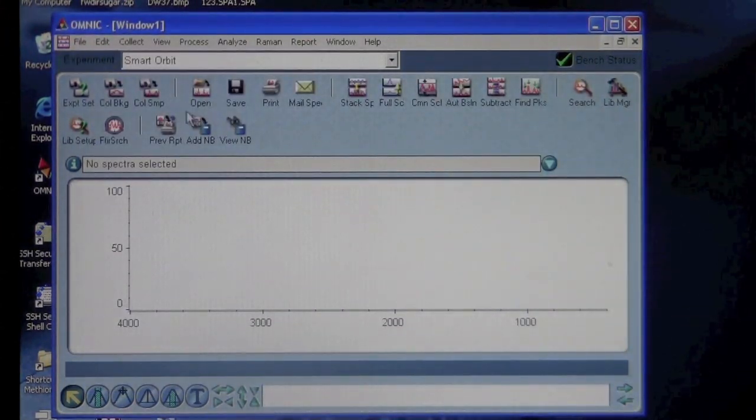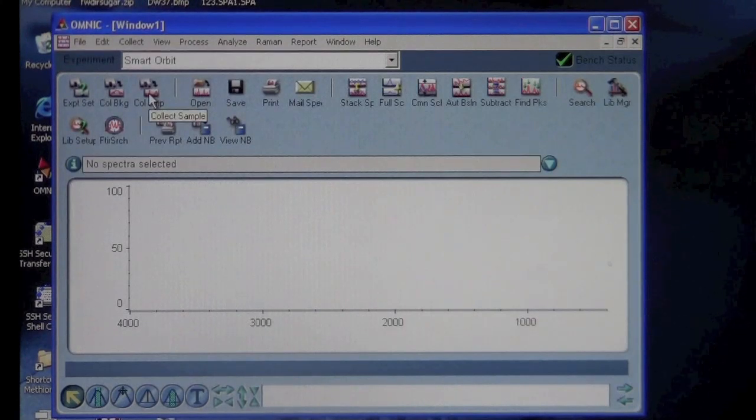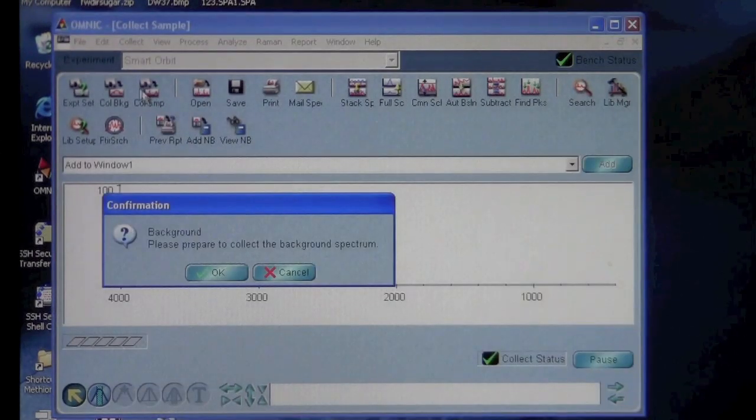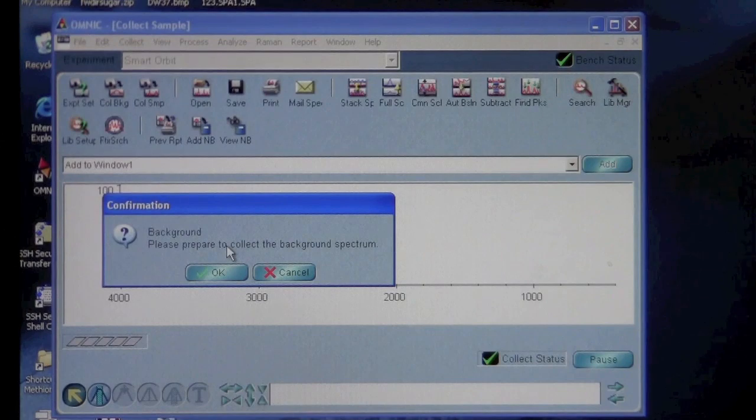Then to collect the data, you want to click on Collect Sample. You do not need to collect background if it's set to collect a background before every sample. We can just click on Collect Sample and it will tell us to collect the background. Over here on the instrument, before we click OK, we want to make sure it's ready for the background.